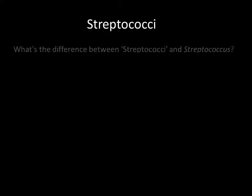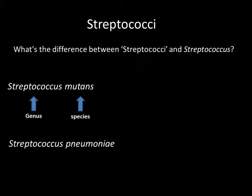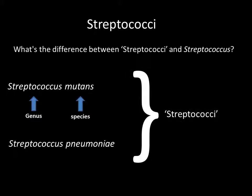What we're going to consider first is the name. It's quite important, because sometimes in the literature you'll see people refer to streptococci and also to streptococcus - one is in italics, and one isn't. Taking an example: Streptococcus mutans. One word is referred to as the genus and the other as the species. Another example: Streptococcus pneumoniae, the pneumococcus - pneumoniae tells us it's a different species of the genus streptococcus. Together, these organisms are examples of streptococci. Streptococci just means more than one streptococcus, and it's not in italics because this isn't an official classification name.